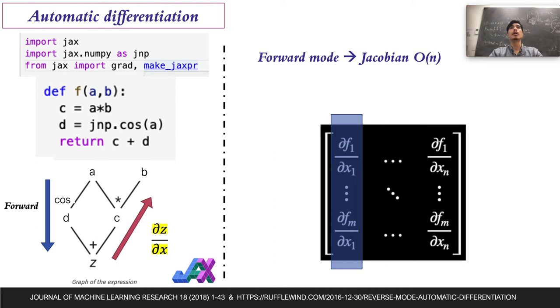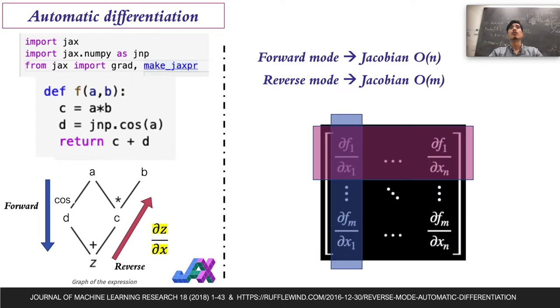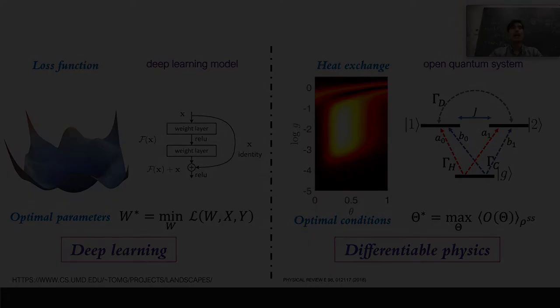One of the interesting properties and applications of automatic differentiation is the construction of Jacobians for vectorial functions. To do this, we can use two styles: forward mode allows to compute the Jacobian column by column, and reverse mode computes it row by row.